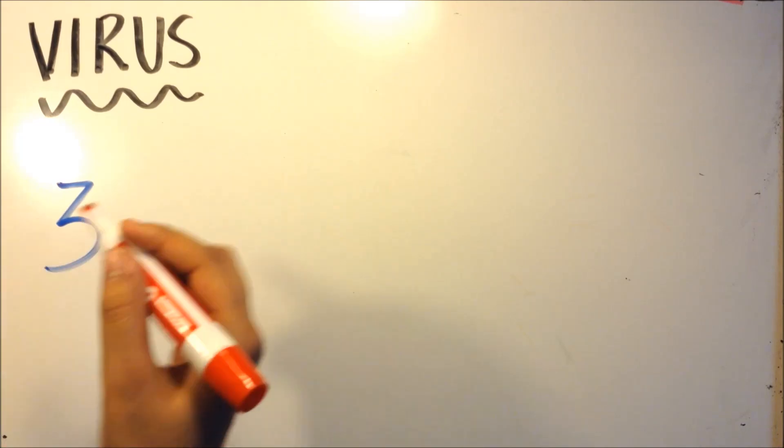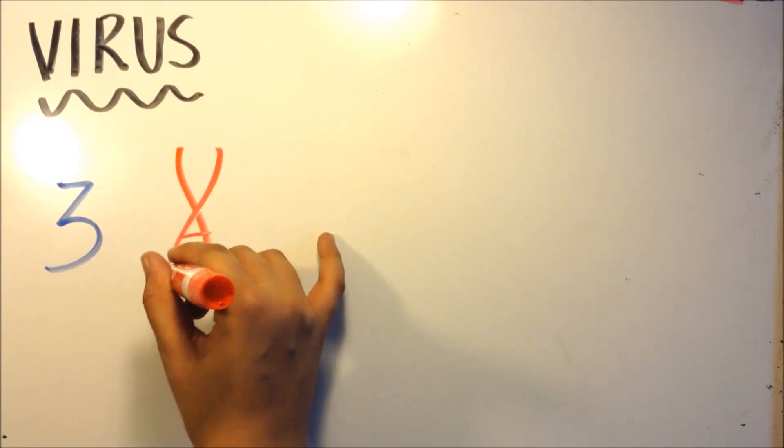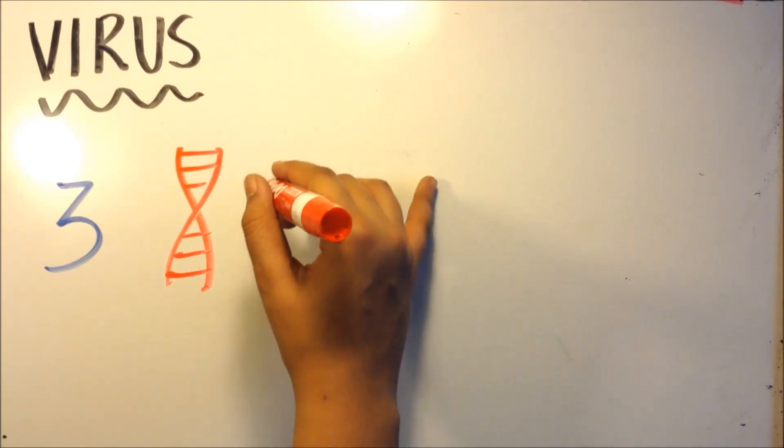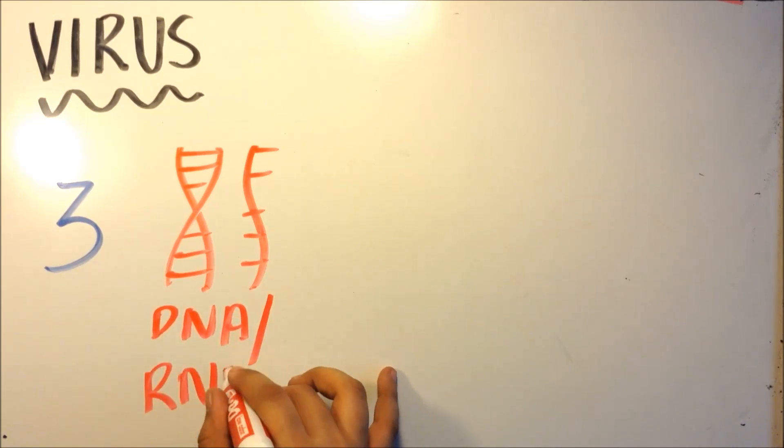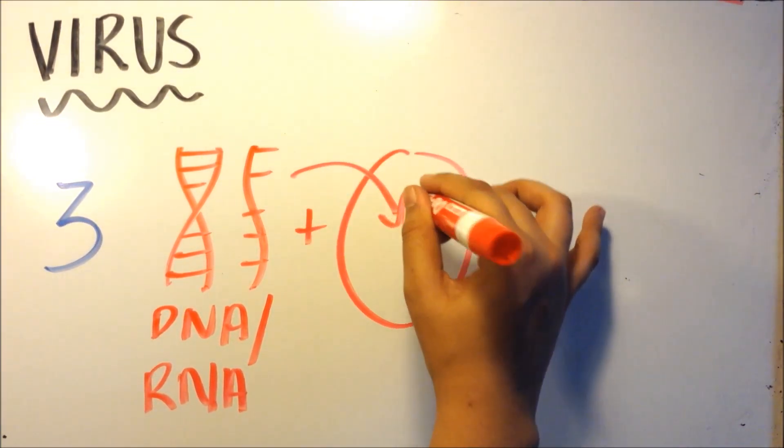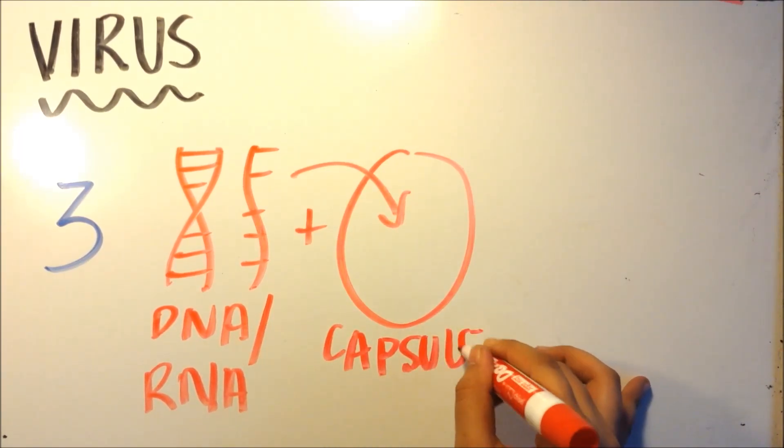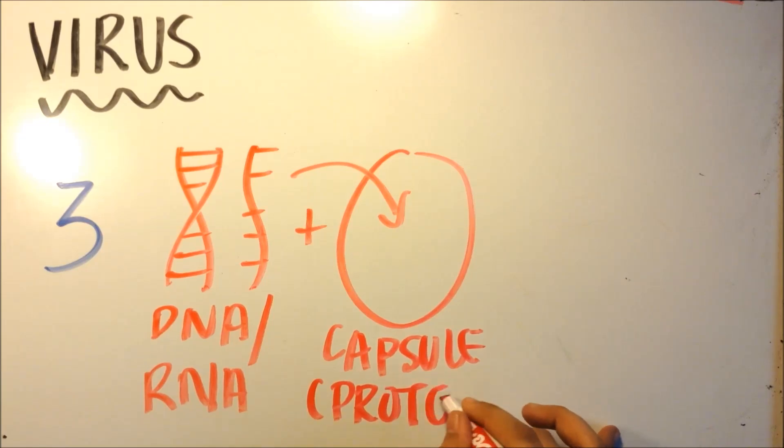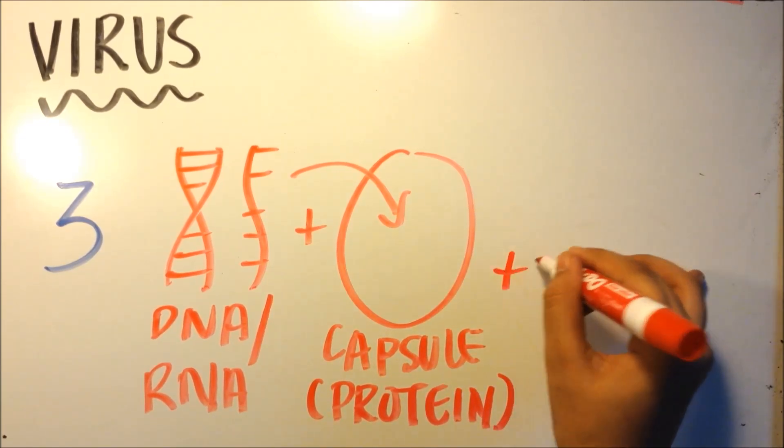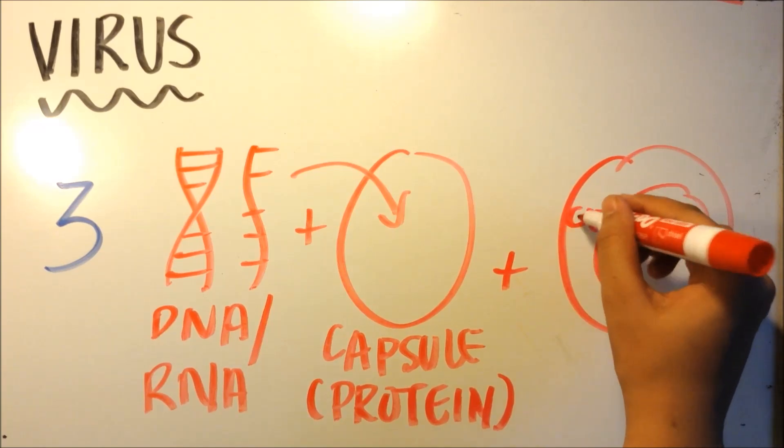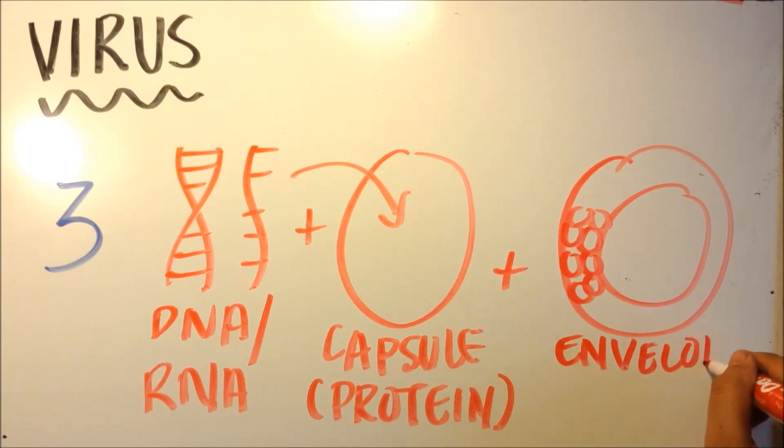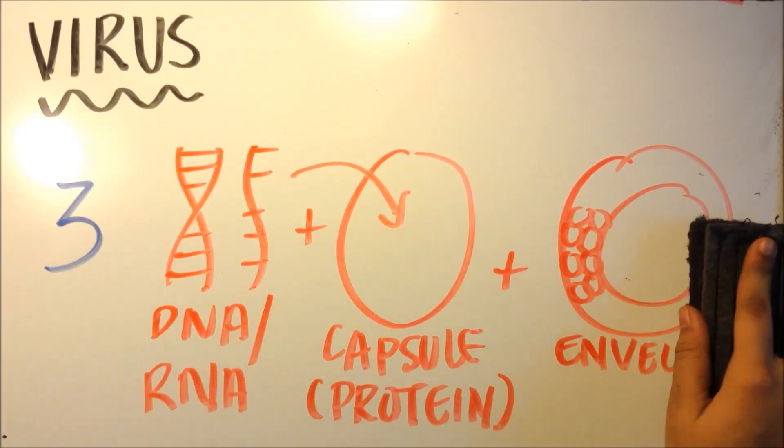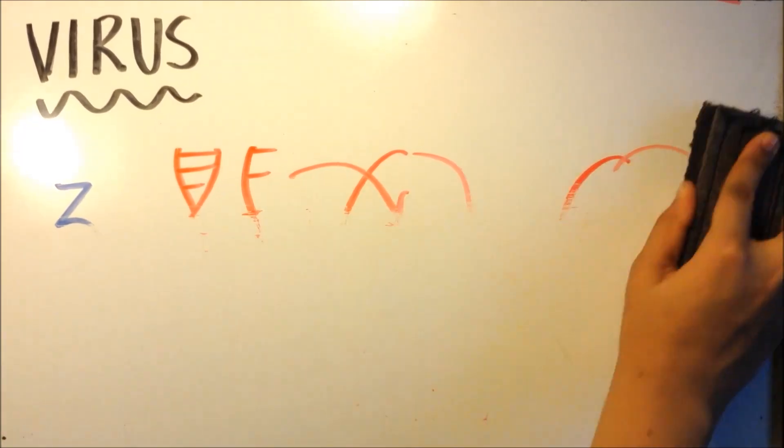First, it's made up of genetic material - this can be either DNA or RNA, and either one can be single-stranded or double-stranded depending on the virus. There's also a capsule where the genetic material is stored, usually made of proteins. And one of the most important structures is the envelope - this is how a cell recognizes a virus, because a virus can only work if a cell recognizes it.